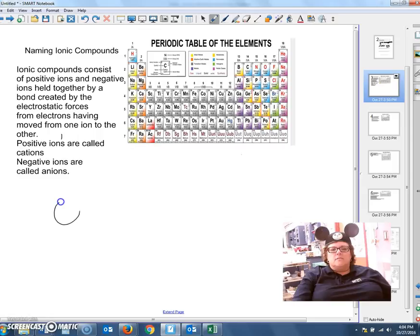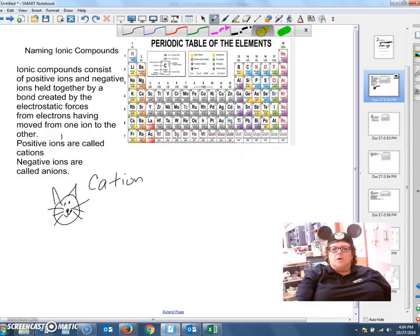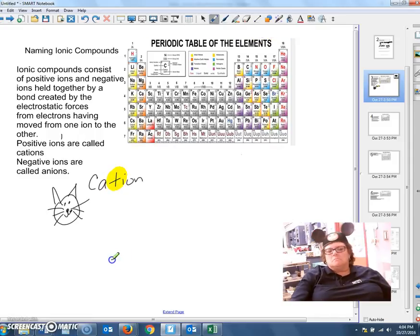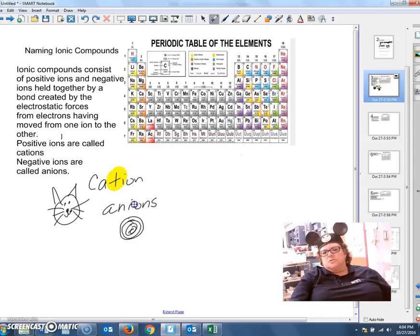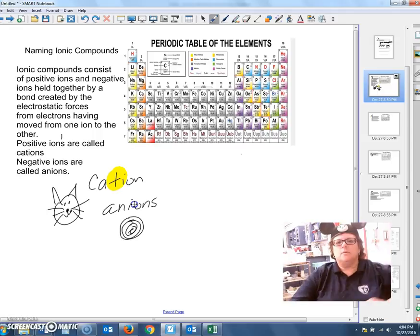Cations, I always think of it as cats are cool, so that's positive. Somebody else pointed out that cations has a plus sign in it. Anions, I think of like onions. Onions smell bad and give you bad breath and make you cry. And so they're anions. That's the way I've always remembered it.